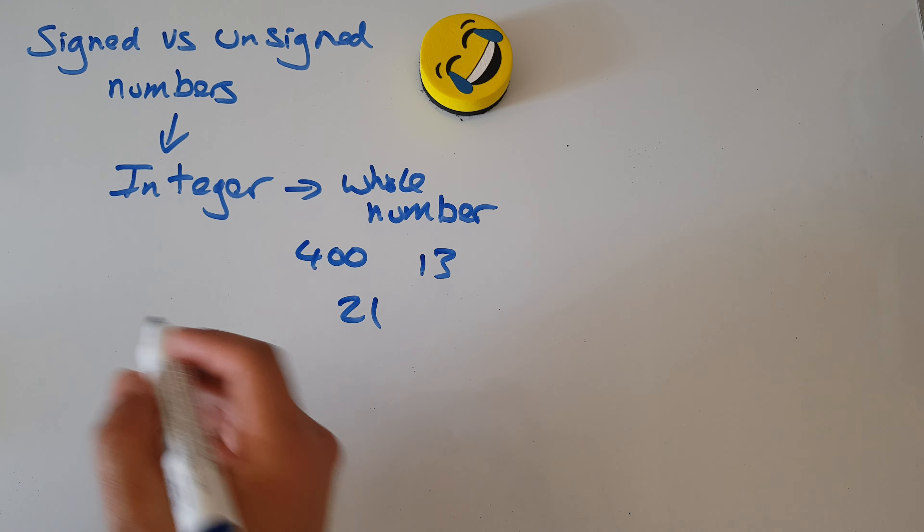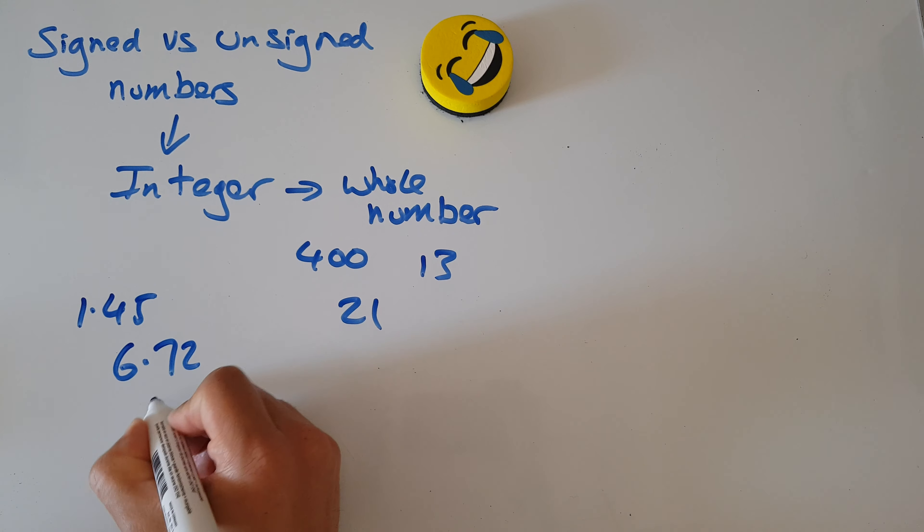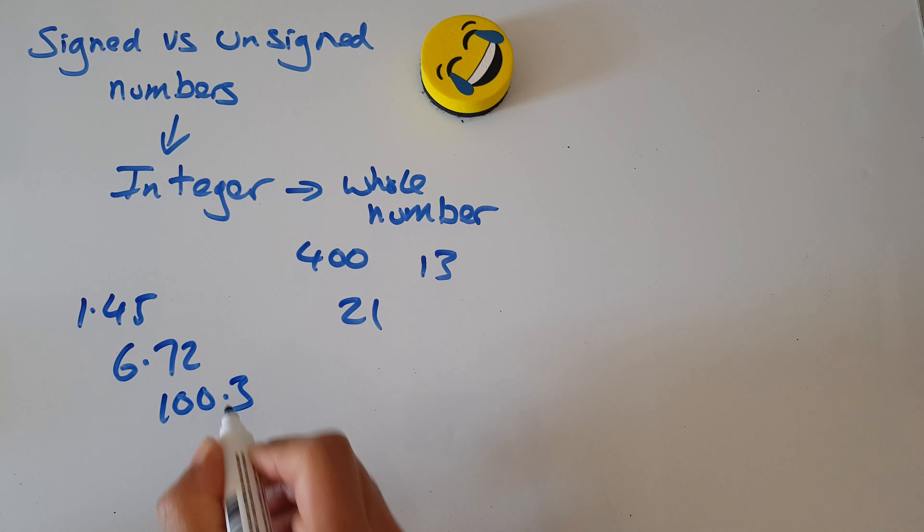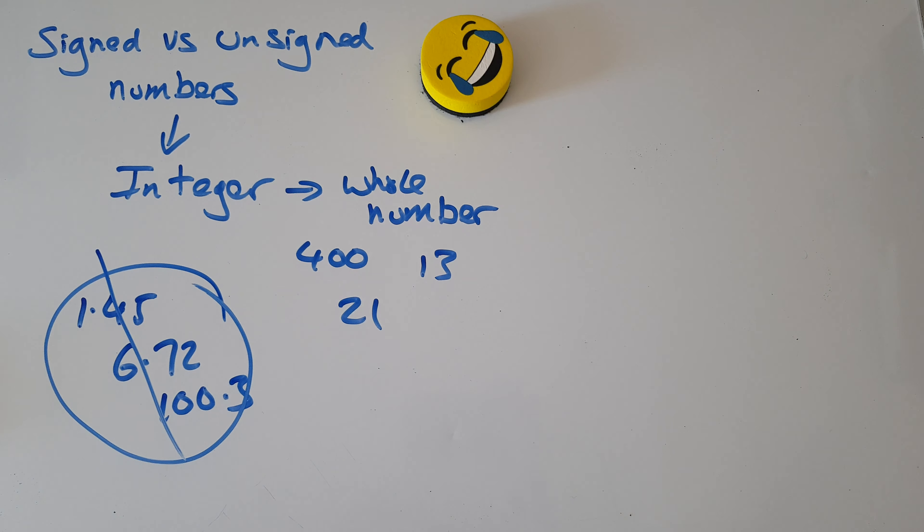Okay, well what's not a whole number? 1.45, 6.72, 100.3 - well these are not whole numbers, these are numbers with decimals. We call them real floats, but we'll come to that another time.